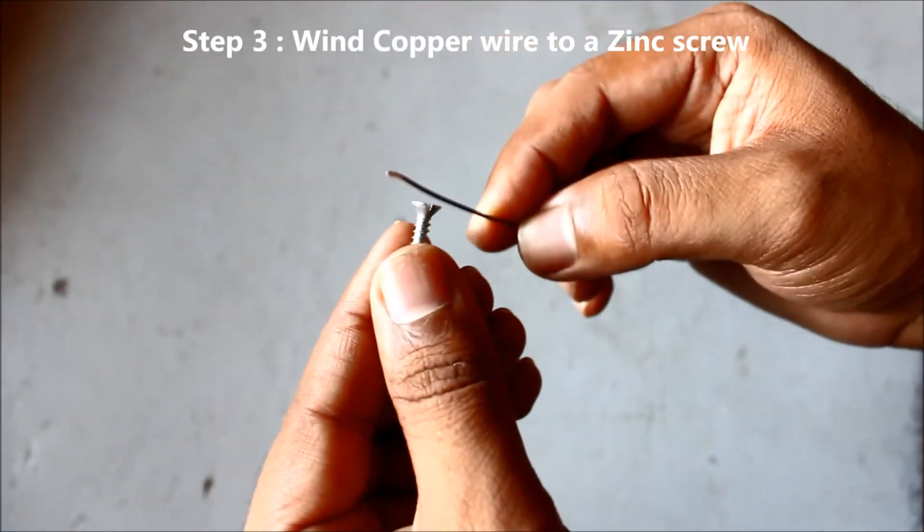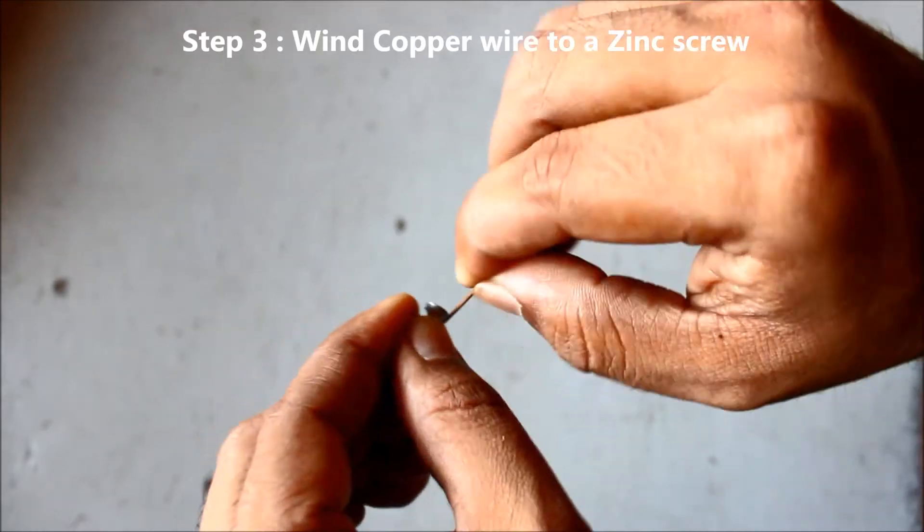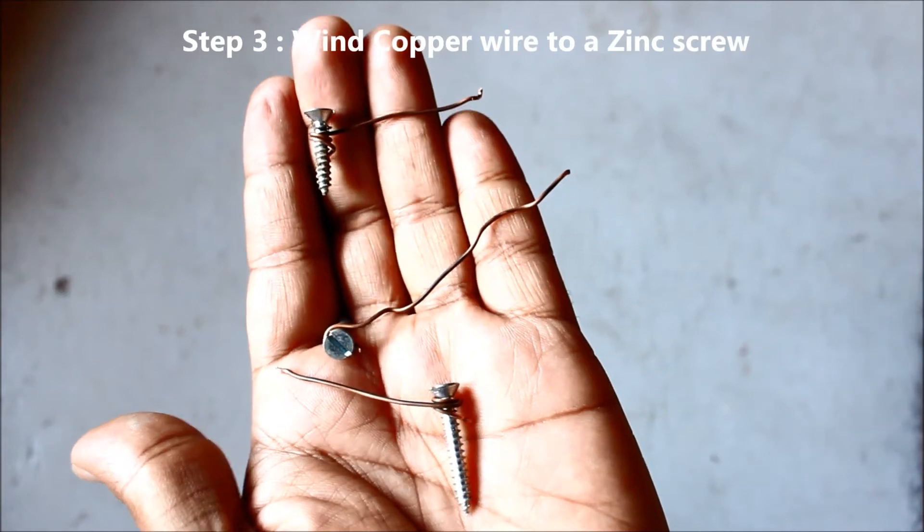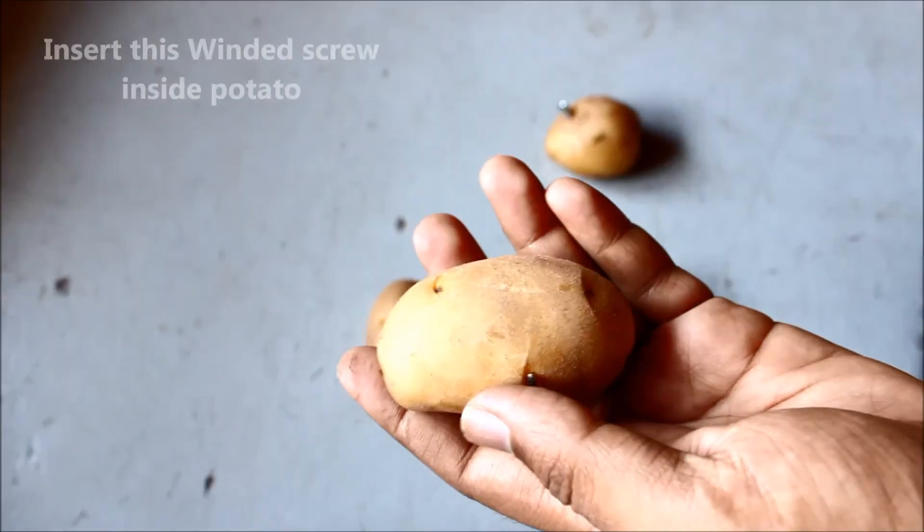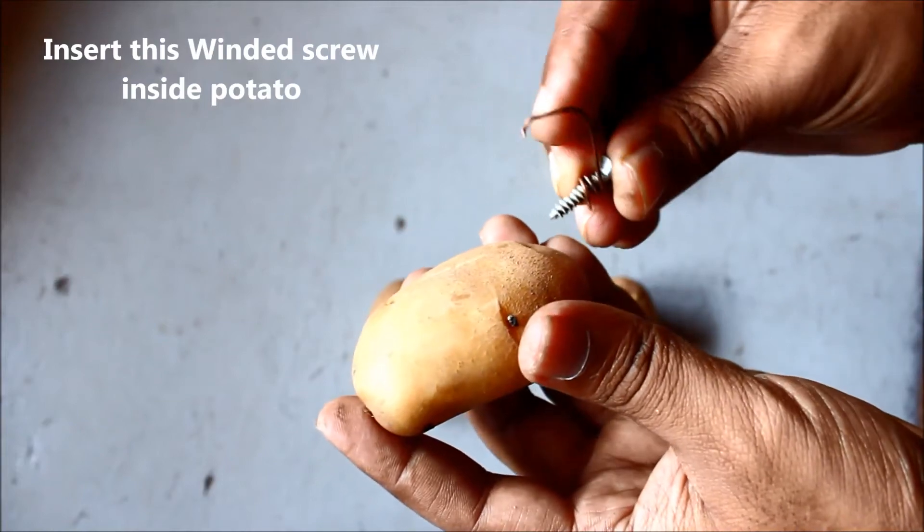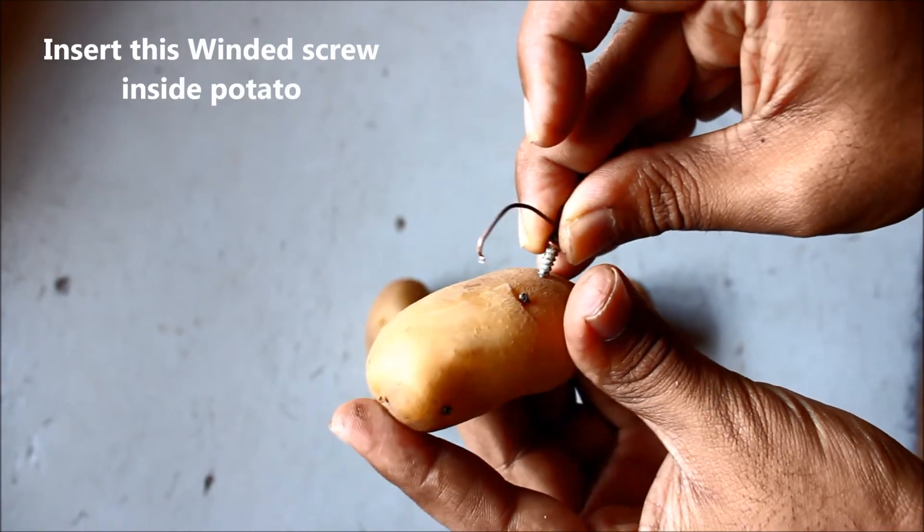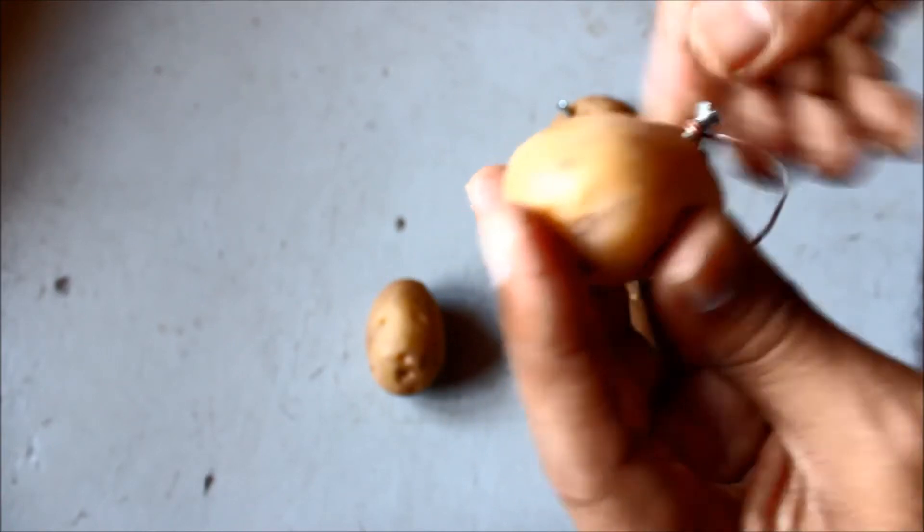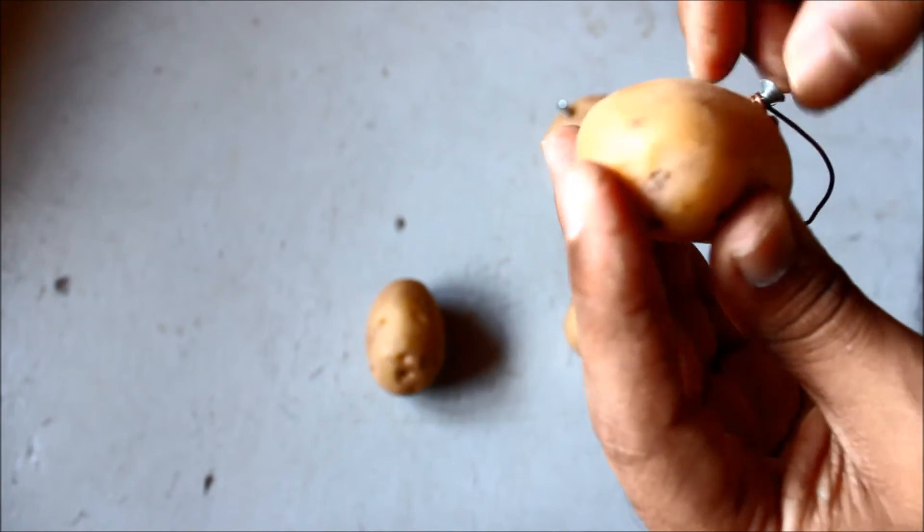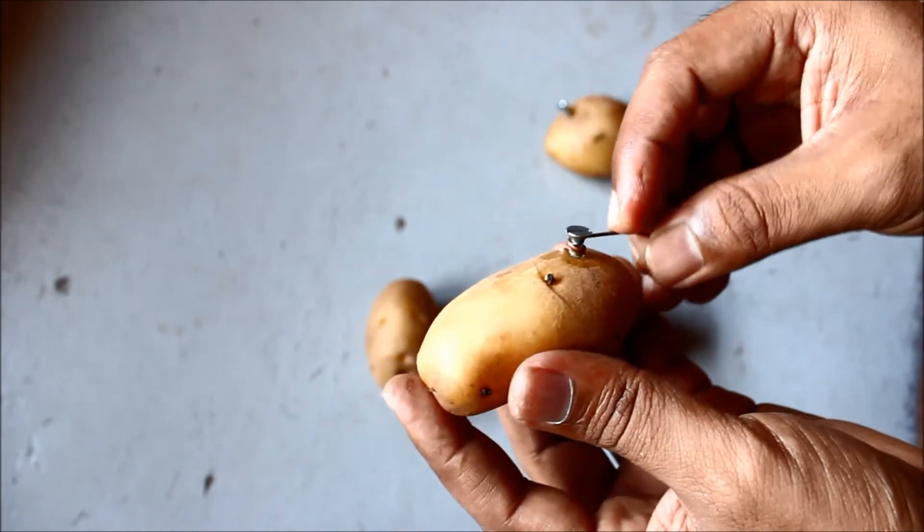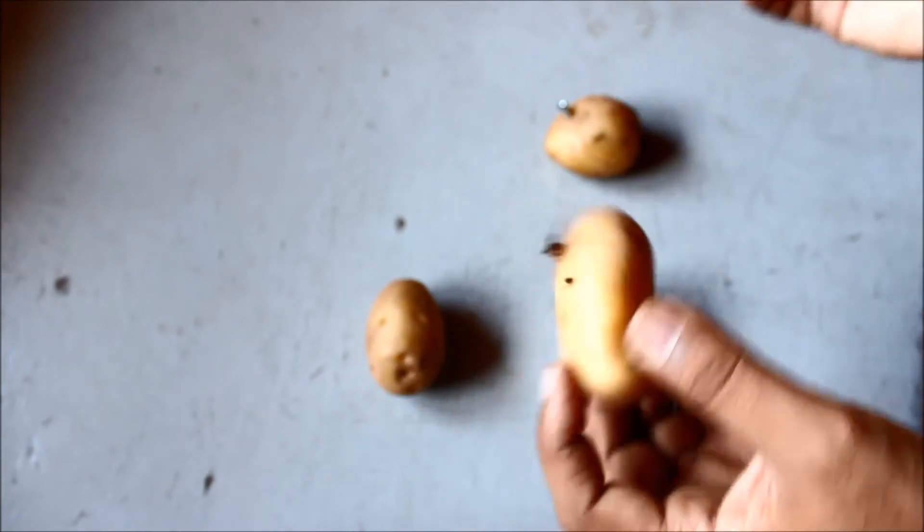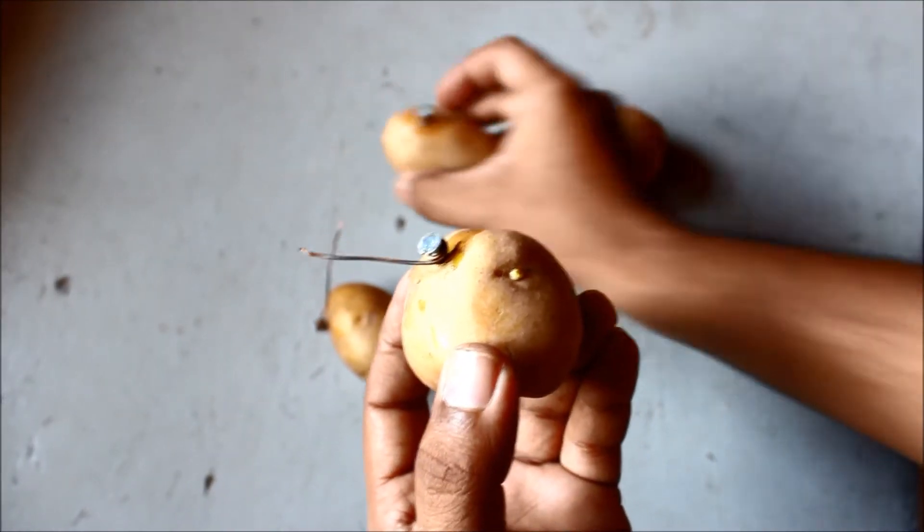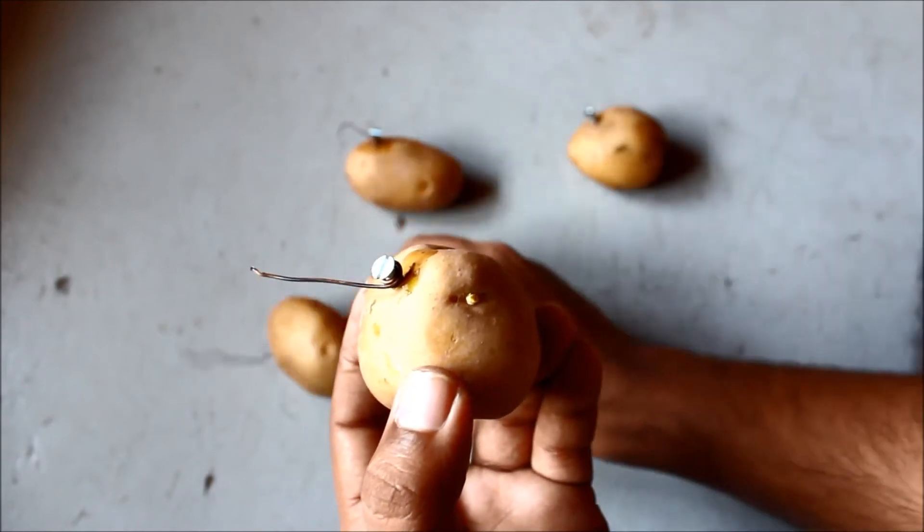Step number 3, wind your copper wire to the zinc nail, like this. And do this for 3 or 4 times, and then just insert it into the one end of the potato, just drill it like this. Do this for all 3 potatoes. This is first, second, and this is the third one.